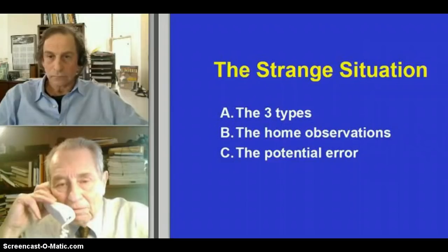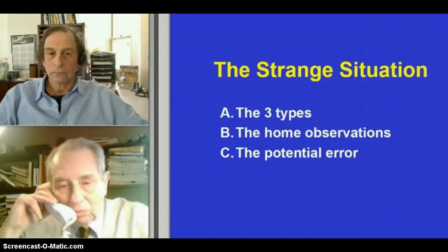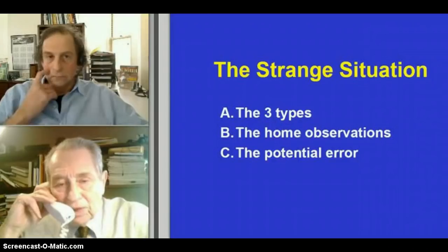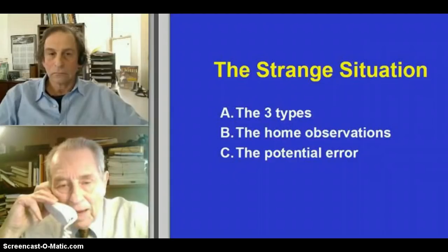Now, here's the error. The error is that the students told her, you know, the kids you call B securely, they're very good at home. They rarely cry, but the kids who are C, they're crying all the time. And the potential error, therefore, is the following.